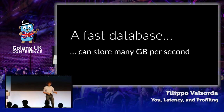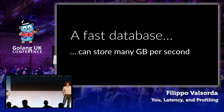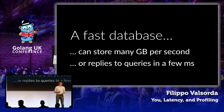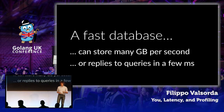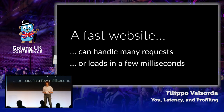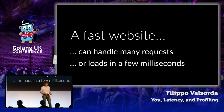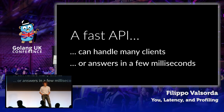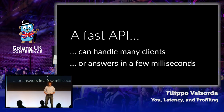A fast database is one that can store, retrieve, and process a lot of data in a short amount of time. But a fast database can also be one that takes very little time to answer your queries — returning in a few milliseconds every time you query it. This gets even more clear with a website: a fast website is one that can handle a lot of requests at the same time, or one that loads fast and takes a few milliseconds to send you the HTML page. Same thing for an API: it can be one that handles many clients at the same time, or one that returns very fast every time you query it.